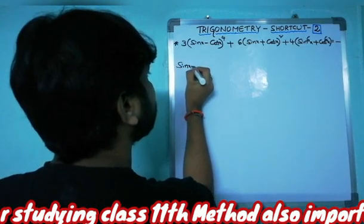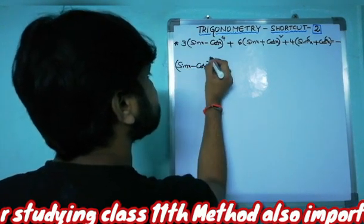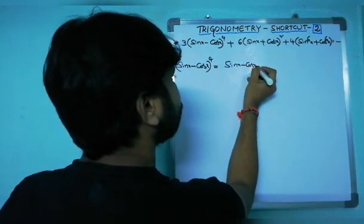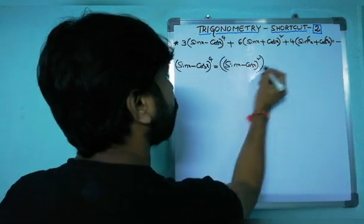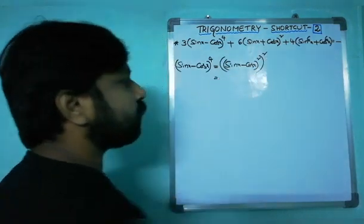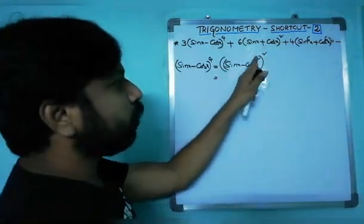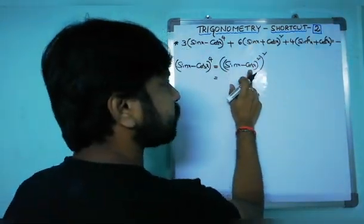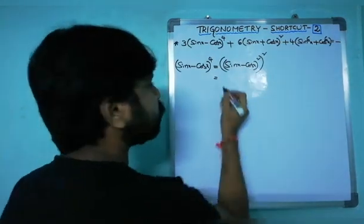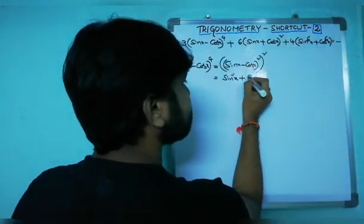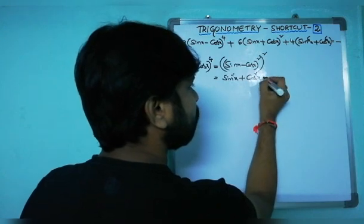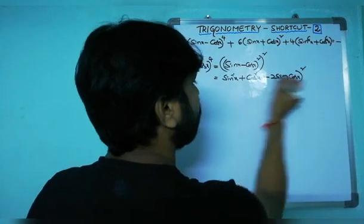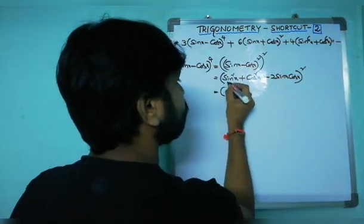(sinx - cosx)⁴ can be written as [(sinx - cosx)²]². This equals (a - b)² whole square. The (a - b)² formula is a² + b² - 2ab, so that gives us (sin²x + cos²x - 2sinx·cosx)².